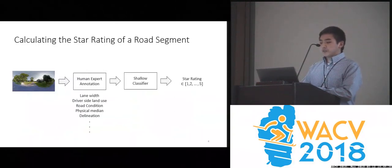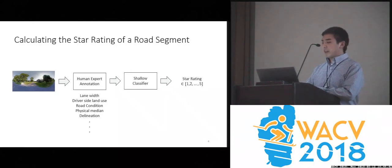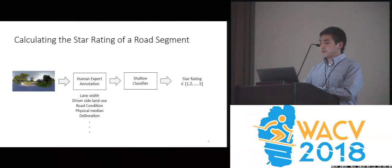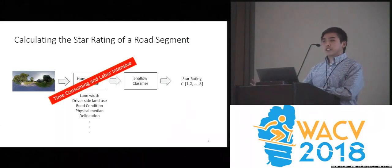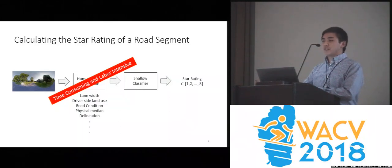To calculate the star rating of a road segment, the standard approach is to first obtain a panoramic image of the road segment. A human expert then assigns various road-level attribute labels to the image, including lane width, driver-side land use, road conditions, and so on. The labels are then passed to a shallow classifier, which outputs the star rating. But the annotation process can be very time-consuming and labor-intensive, and that's a problem because transportation departments often have to assess thousands of miles of roads periodically.